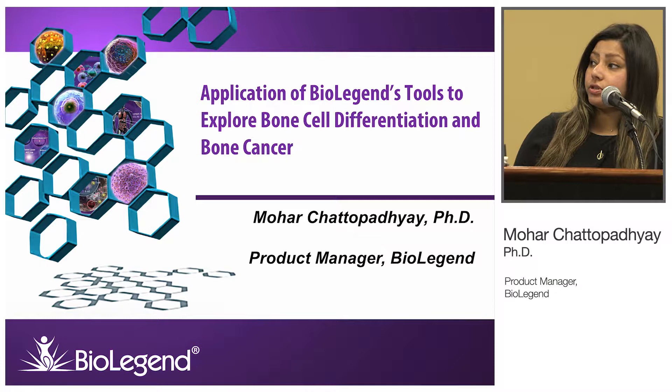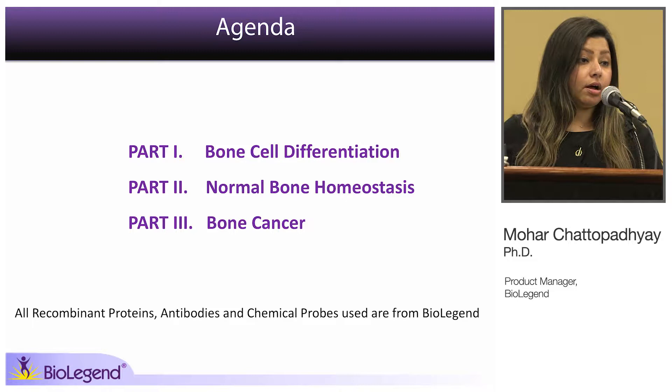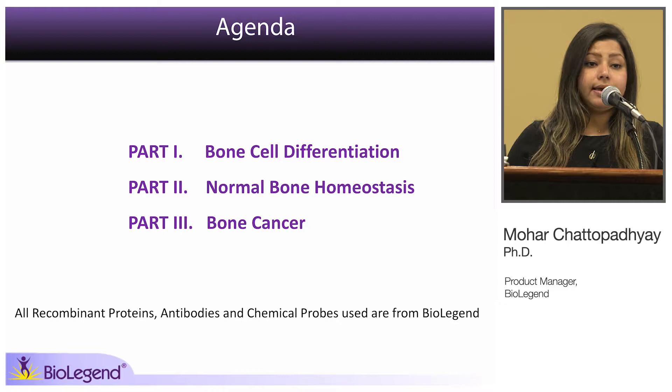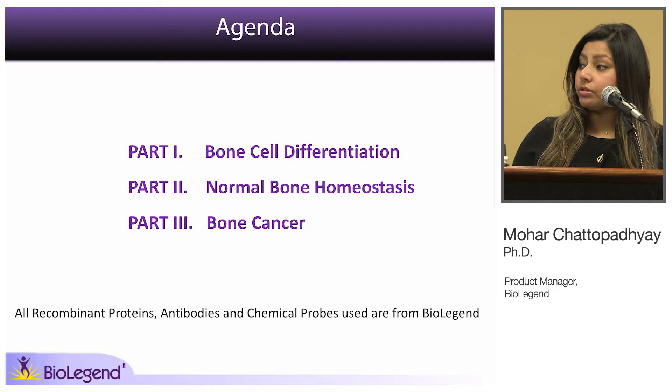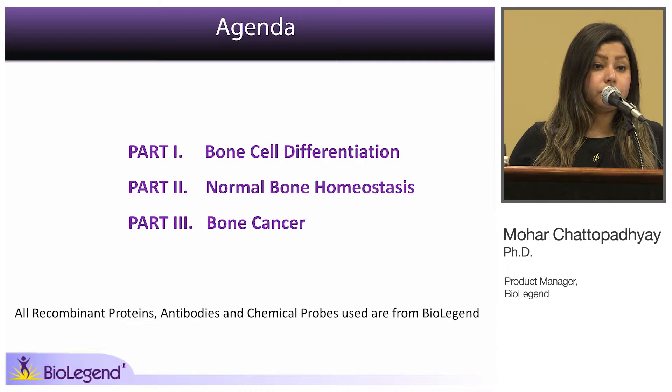This is the agenda for my talk — there are going to be three parts. In the first part, I will go over bone cell differentiation. In the second part, I will show you normal bone homeostasis data, and the third part is going to be about bone cancer. All the recombinant proteins, antibodies, and chemical probes used in our studies are from BioLegend.